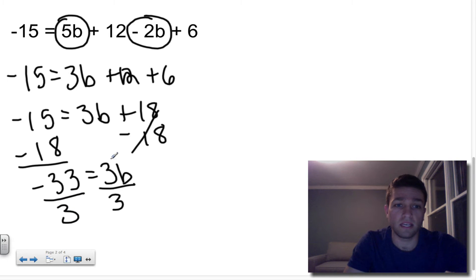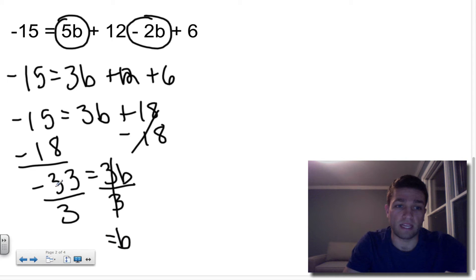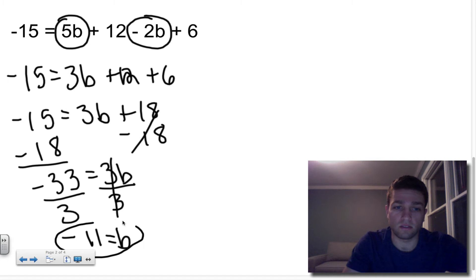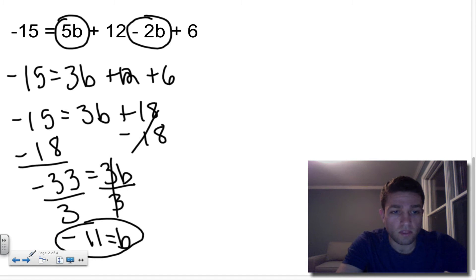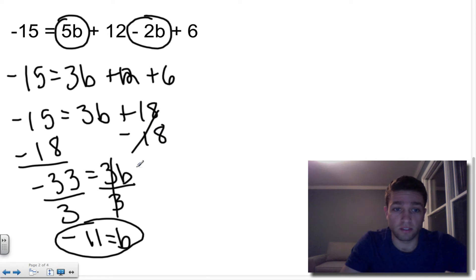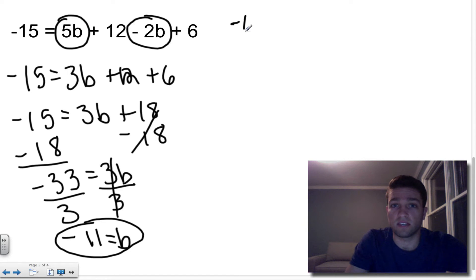Now divide both sides by 3, since that's the inverse of multiplication. 3 divided by itself cancels out, and -33 divided by positive 3 is -11. So B = -11. If you want to double-check your work, you can take -11 and plug it back in for B. 5 times -11 is -55.